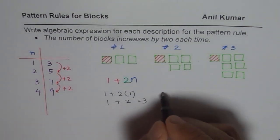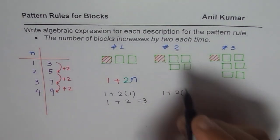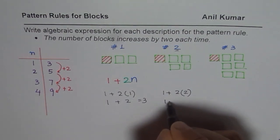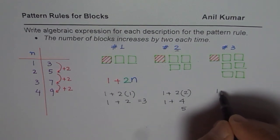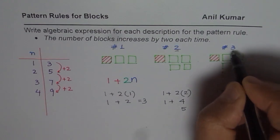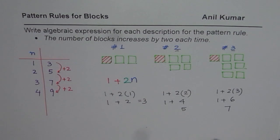Here we have one plus two times two, the figure number. So which is one plus four and that is equal to five. In this case it is one plus two times three, where three is the figure number. So we have one plus six and that is seven. So it works.